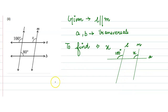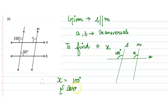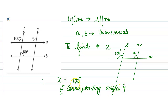Therefore, x will be equal to 100 degrees. These types of angles are known as corresponding angles. x corresponds to 100 degrees, so these two angles are equal. x is 100 degrees. I hope this is clear, thank you.